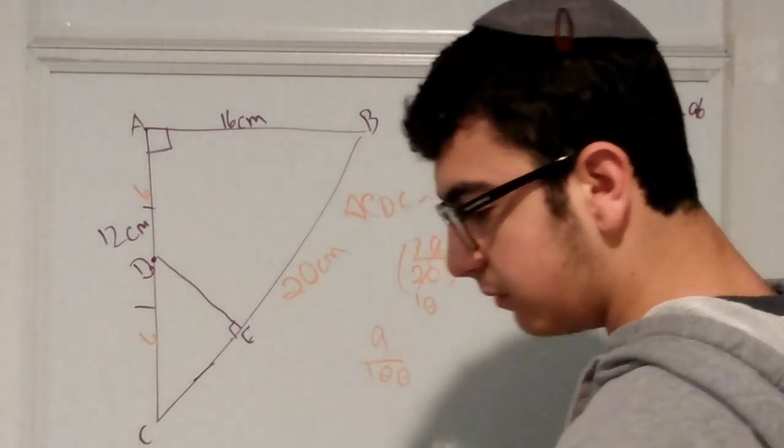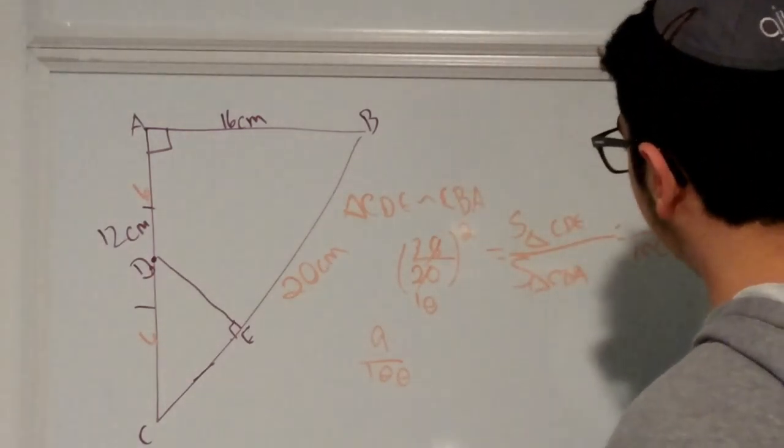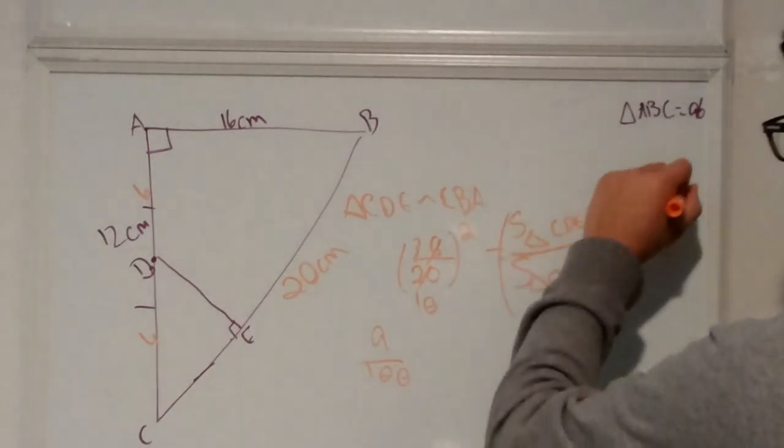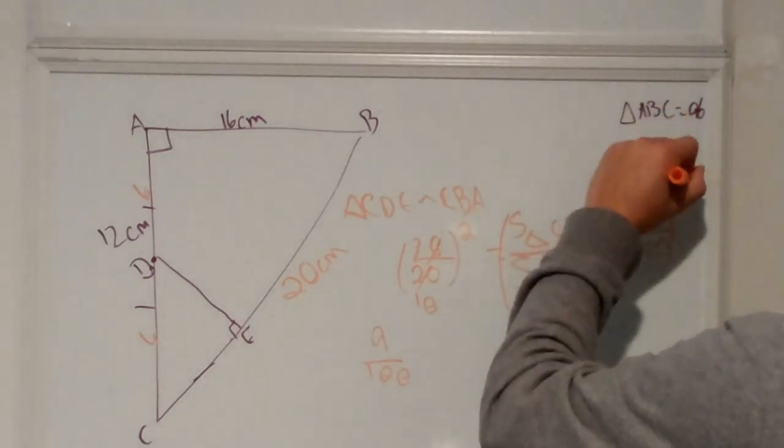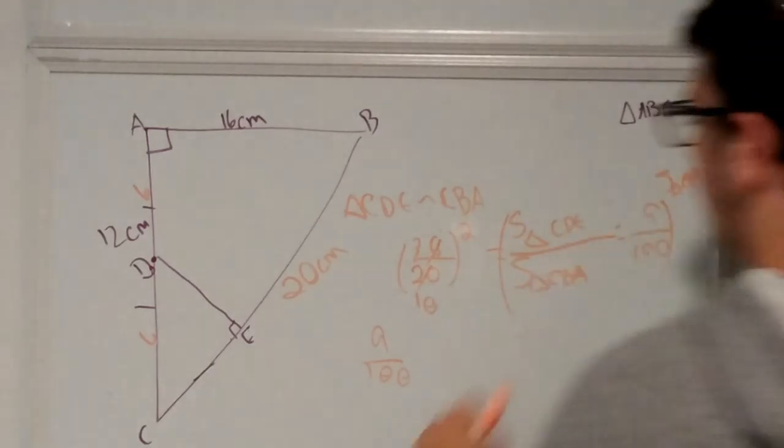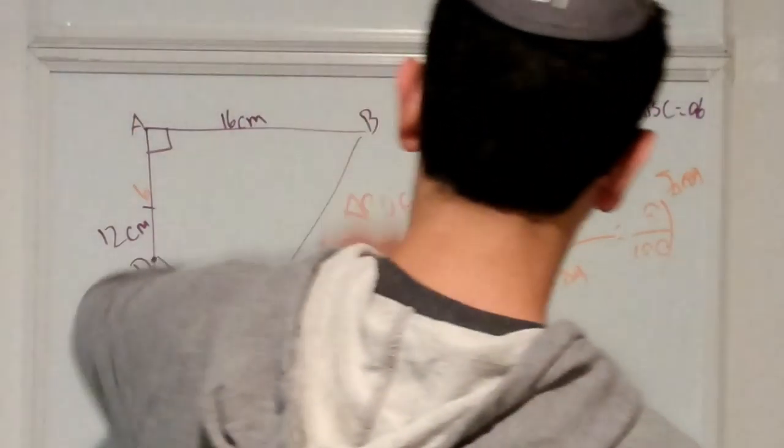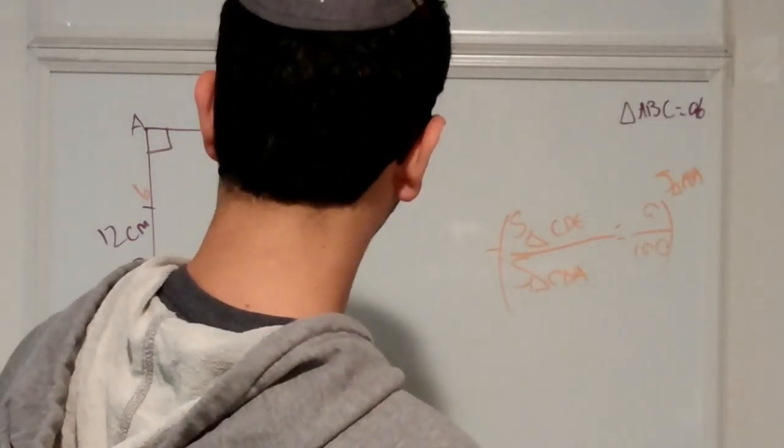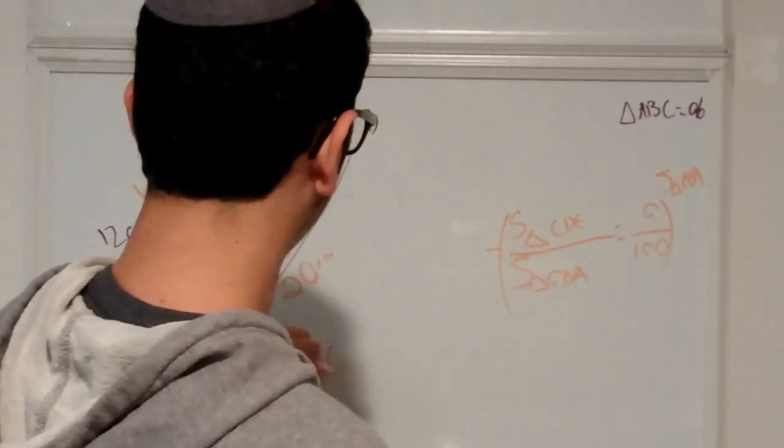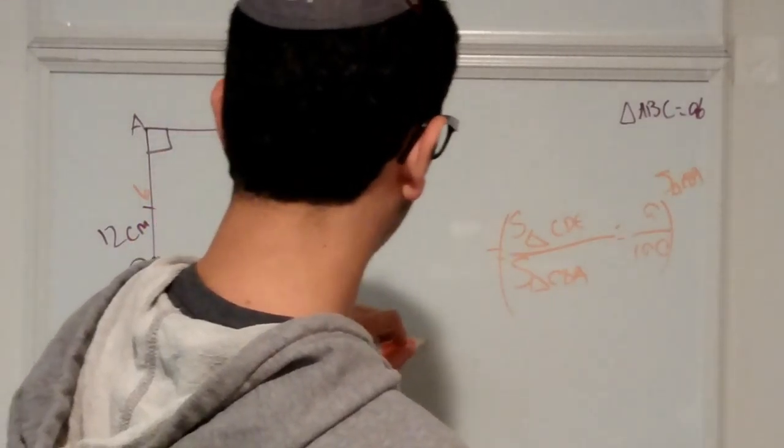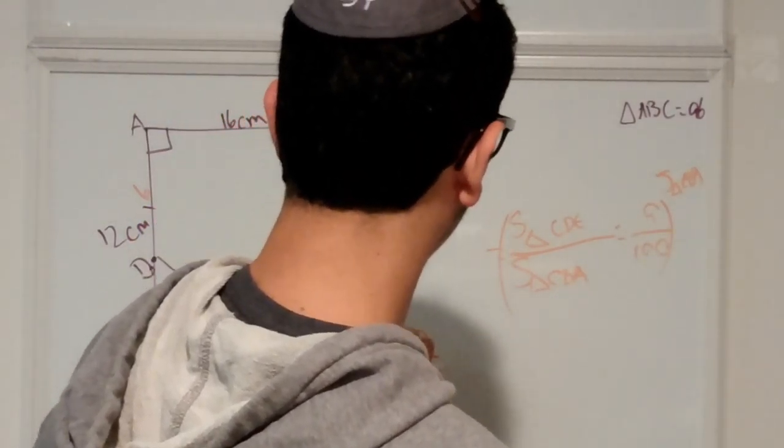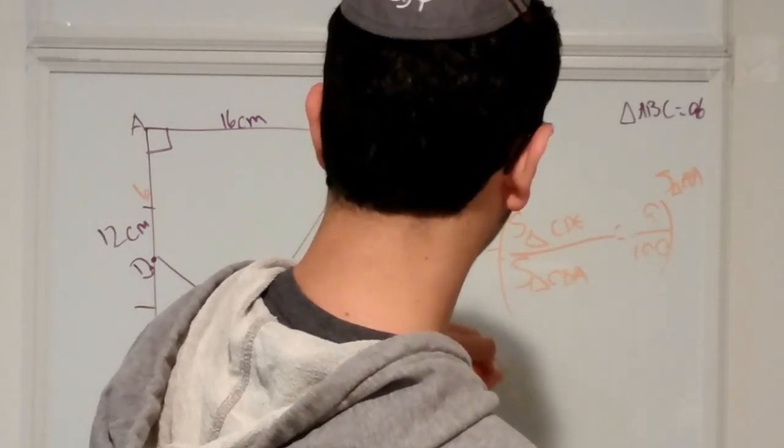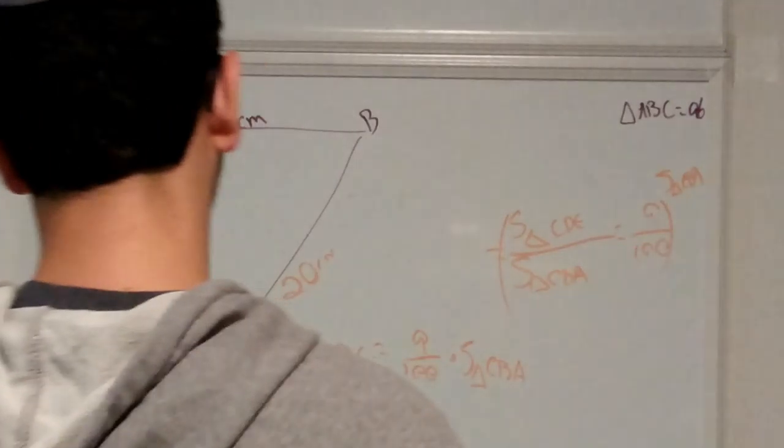So now what we can do is just do a little bit of algebra. If we multiply both sides by the area of CBA, we will be left off with the area of triangle CDE is equal to 9 over 100 times the area of triangle CBA.